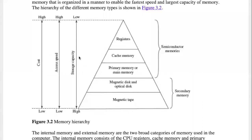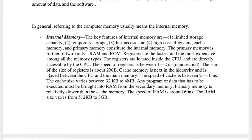If we have less than the register storage capacity, it means the access speed is a bit better than the cost. The other level is cache memory — the cache memory is a bit better than the storage capacity, so the access speed is less than the cost. At the next level, we have less storage capacity but the access speed is less than the cost.